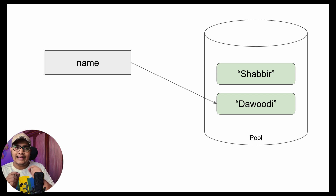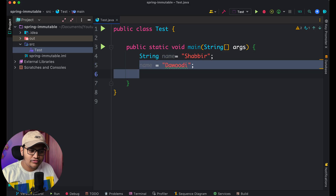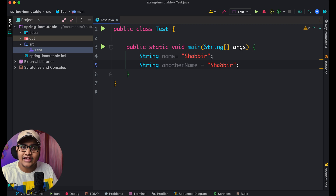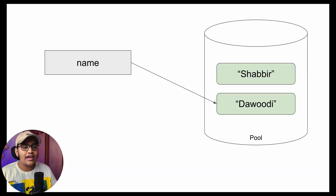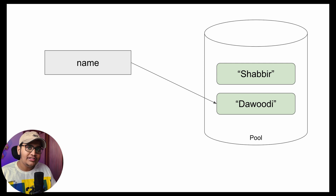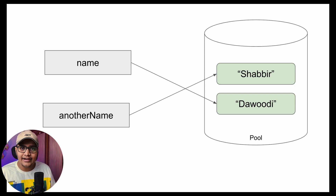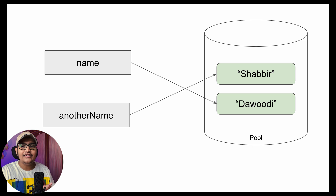This means Java is not updating the current reference itself — it is creating a new object and referring that object to the variable. Now if I declare `String anotherName = "Shabir"`, what the JVM will do is check whether an object with the value "Shabir" is already available in the string pool. Since it is, the variable `anotherName` will directly refer to that existing object rather than creating a new one.